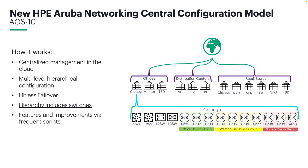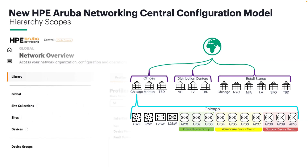Now let's walk through inheritance in the new hierarchy. On the left, we have part of the new Central configuration UI. At the top, we have the library, which stores reusable profiles available to be assigned to the scopes listed below. The global scope is where we apply settings that need to be consistent across the organization — things like SSIDs, roles, VLAN names — basically anything that should be inherited by every site.